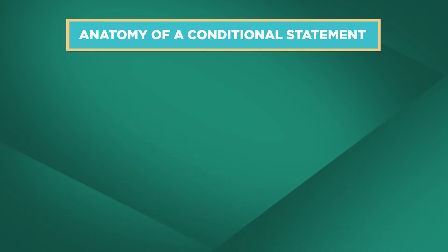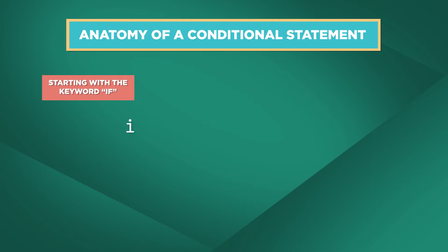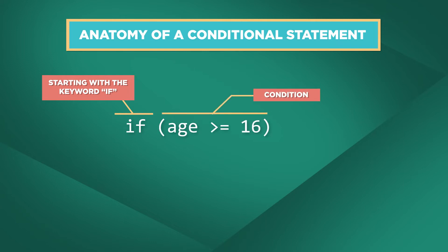One way to write a conditional statement is by starting with the keyword IF. An IF statement has two main components. First, we need to specify the condition we want to check. Inside the parentheses, we can write any statement that will result in a boolean value, either true or false.